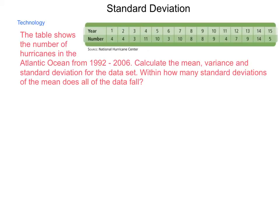So, what we're going to do is use the number set here. The table shows the number of hurricanes in the Atlantic Ocean from 1992 to 2006. 1992 signifies year 1, and 2006 is year 15. Calculate the mean, variance, and standard deviation of the data set, and within how many standard deviations of the mean does all the data fall.